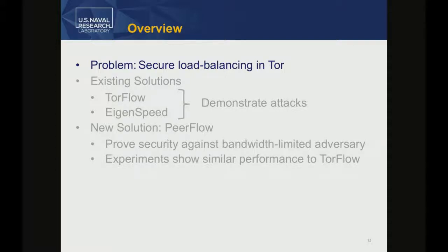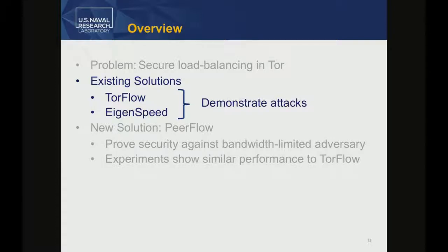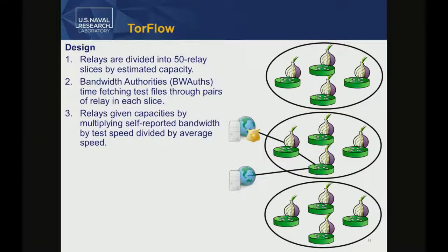I'm not the first person to recognize this—other people have looked at it, including the TOR project itself, and there are a couple of existing solutions. In this paper we demonstrate some attacks on these systems. The first system, TorFlow, is a system that TOR designed for load balancing. It was primarily designed for performance reasons, to accurately measure relay speeds, with security as at best an afterthought. The flaws are fairly obvious to anyone who understands it—including the TOR people.